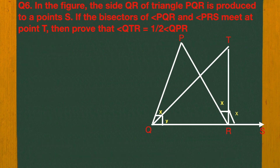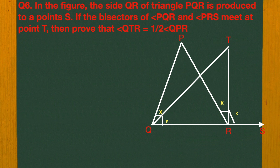Let's go to question number 6. In the figure, the sides QP and QR of triangle PQR are produced to points F and S respectively. The bisectors of angle PQR and angle PRS meet at point T. We have to prove that angle QTR equals half of angle QPR.